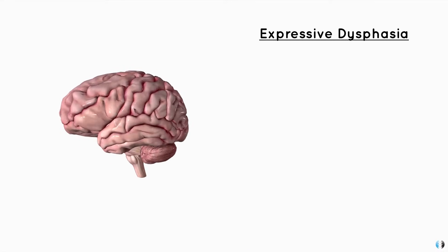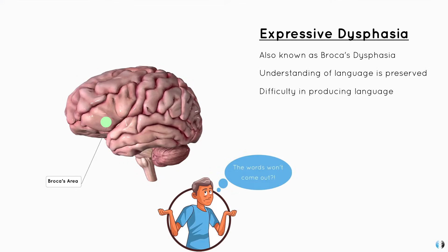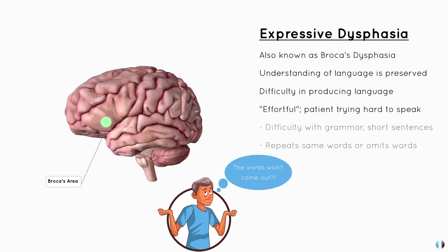Let's start with expressive dysphasia. Expressive dysphasia is a disorder that occurs in Broca's area of the brain, located in the frontal lobe, often in the left hemisphere, which is responsible for language production. This is why expressive dysphasia is also referred to as Broca's dysphasia. In this form, comprehension or understanding of language is generally preserved. But the patient may have difficulty in producing language, formulating sentences, and placing the right words together. It is sometimes referred to as effortful speech. These patients may have difficulty with grammar, utter short sentences, say the same word repeatedly, or speak a sentence but omit really important words.